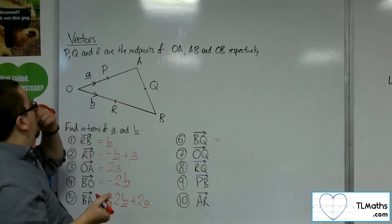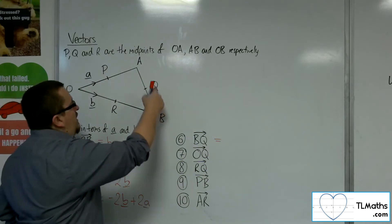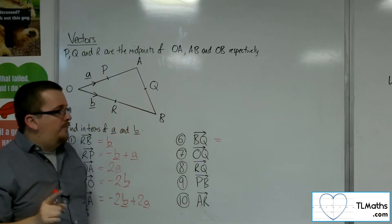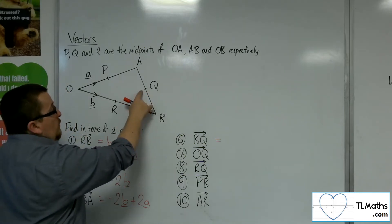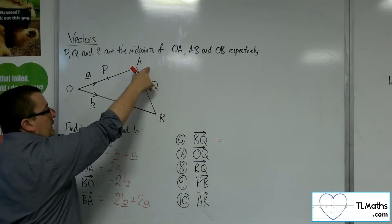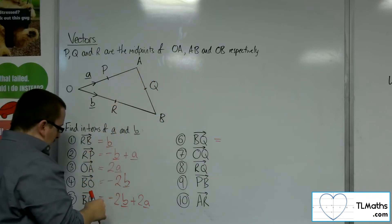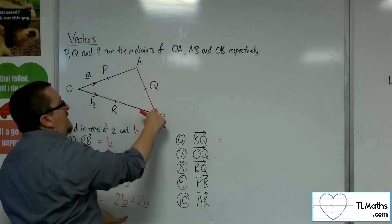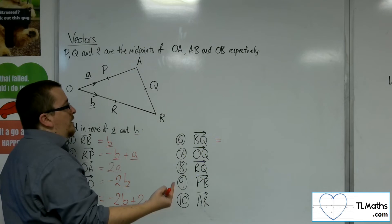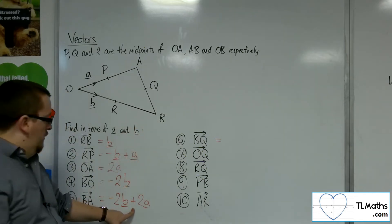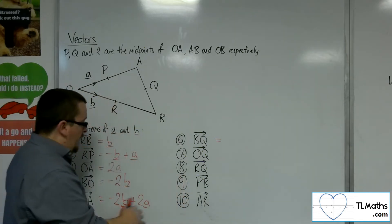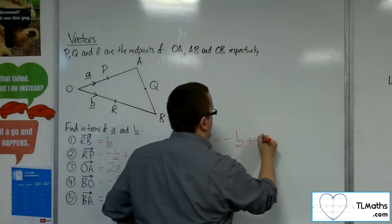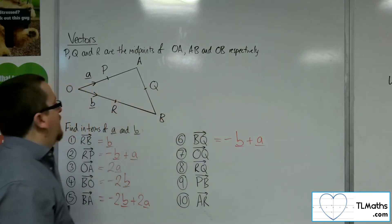So B to Q. Now B to Q, that's a bit of a problem because I don't know what that vector is. However, I do know that Q is the midpoint of BA. So I know how to get from B to A. I just worked it out. So I need to go halfway along. So it would be a half of this. So that must be a half of the minus 2B and half of the 2A. So that's how I get from B to Q.